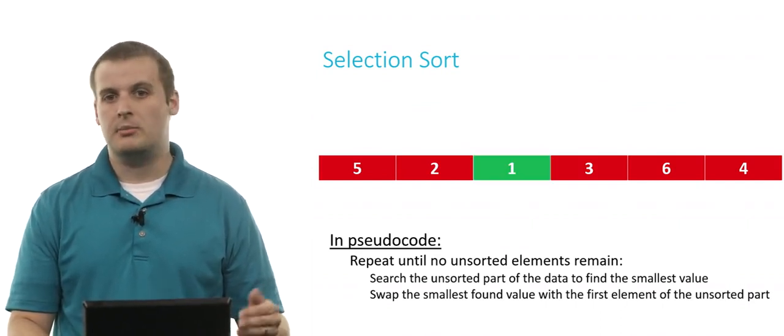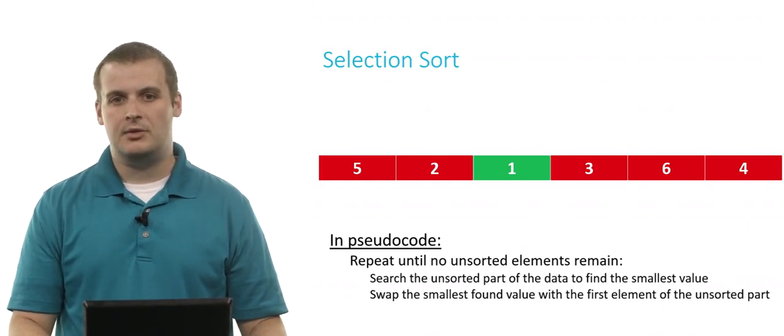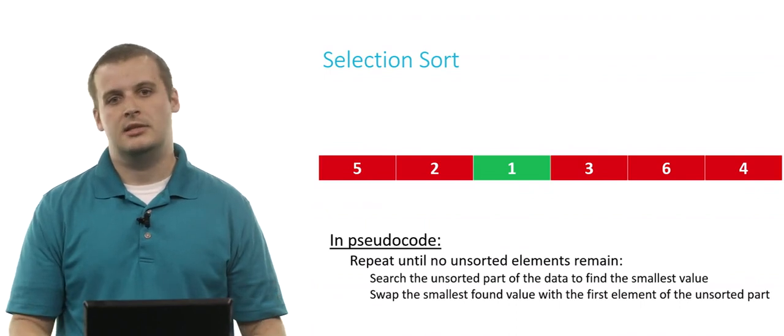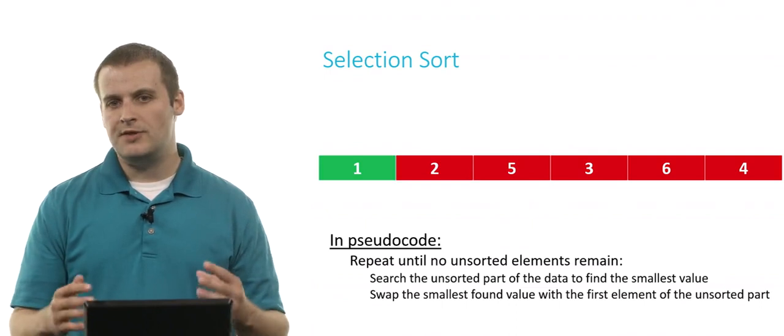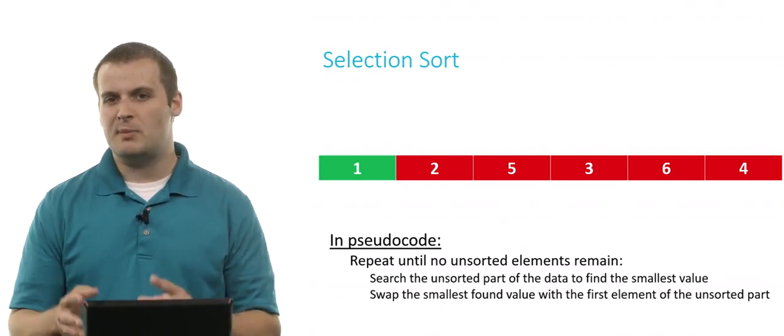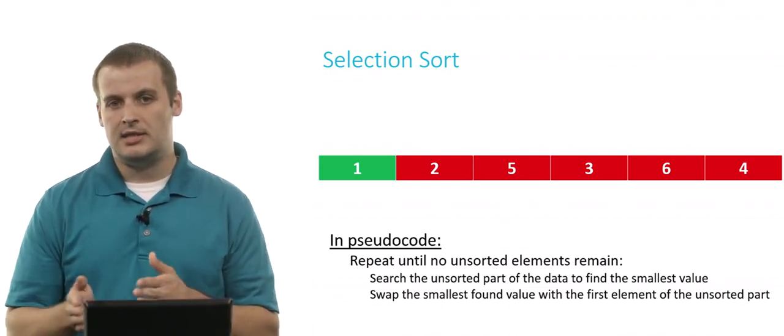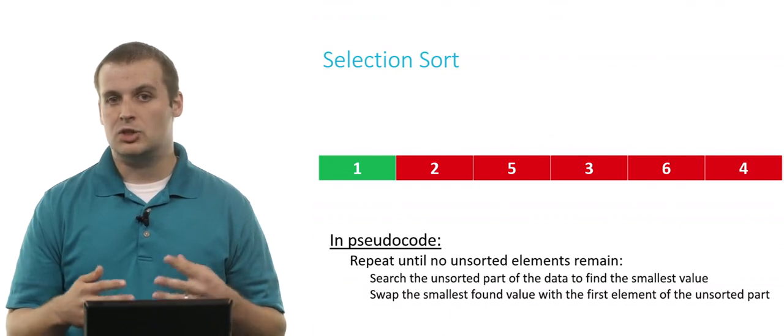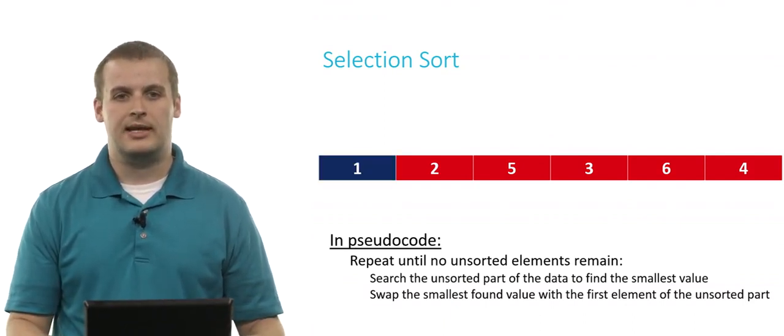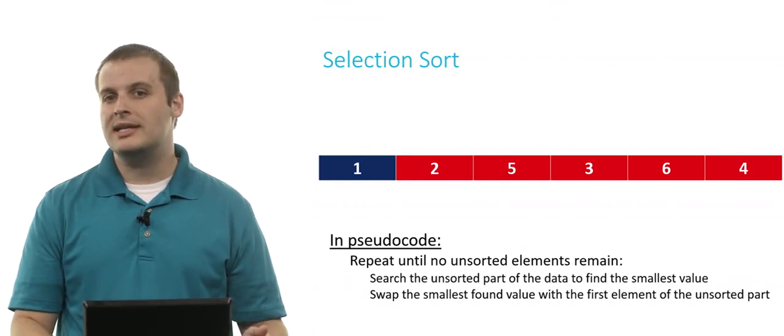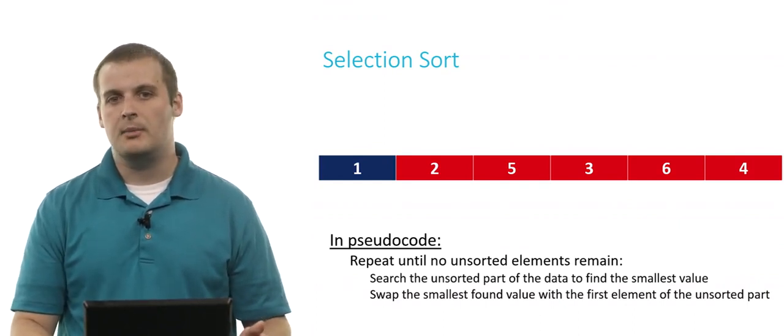So that's part 1. And then part 2, swap that value with the first element of the unsorted part, or the first red element. In this case, that would be 5. So we swap 1 and 5. When we do this, we can visually see that we've moved the smallest valued element to the very beginning, effectively sorting that element. And so we can confirm that 1 is sorted, and we'll indicate the sorted portion by coloring it blue.